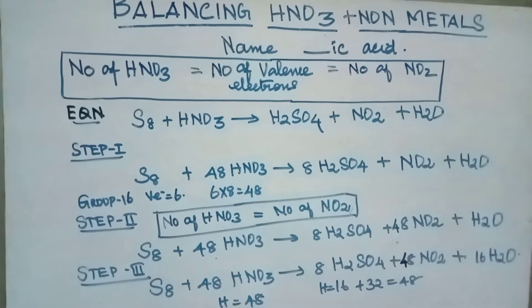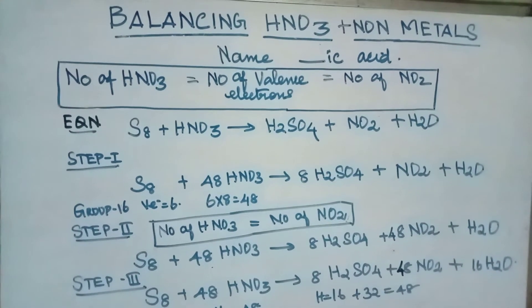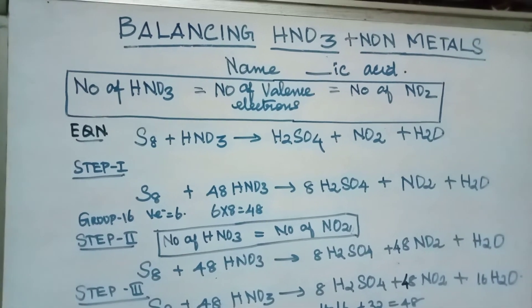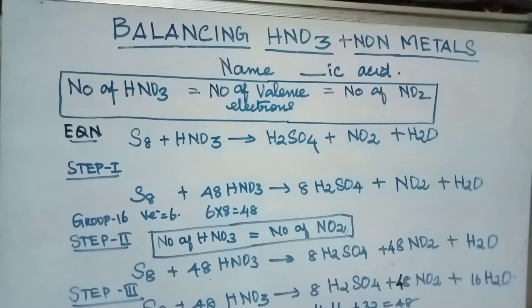S8 is a group of 16 elements. So, balanced electrons are 6. 6 into 8 is 48. So, we can balance on the nitric side 48 HNO3.